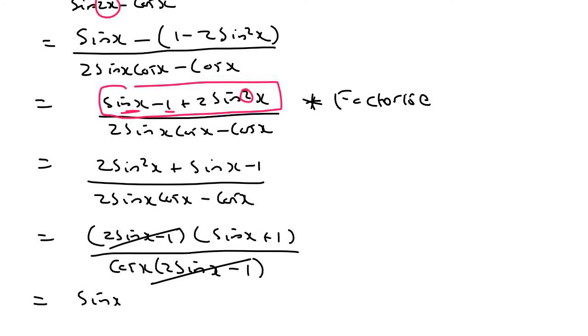And so we're going to be left with sinx plus one over cosx. And therefore, the left hand side is the same as the right hand side.